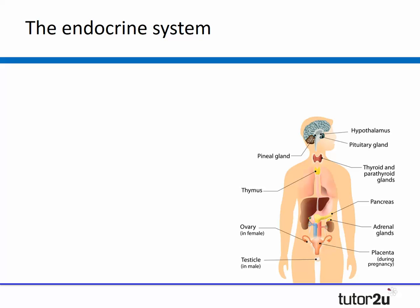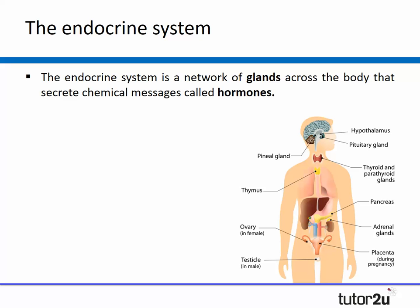What is the endocrine system? The endocrine system is a network of glands across the body that secrete chemical messages called hormones. As you can see from the diagram on screen now, the endocrine system is made up of many glands including the pituitary gland, the pineal gland, the thyroid gland and so on. Now while you do not need to know all of these glands, it is important that you know a small selection including what hormone they release and what effect this has.